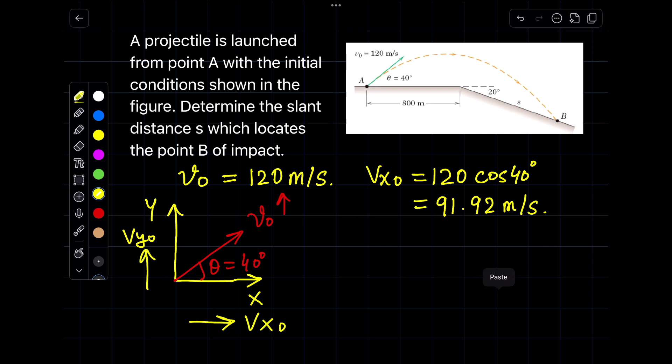It's very easy and simple to calculate. VX₀ will be 120 cos 40°, as I have made this diagram here. And you can also calculate the initial Y velocity by using 120 sine 40°. I hope this is very simple and easy to understand, because whenever we get projectile problems, we have to calculate the initial velocities in X and Y directions.